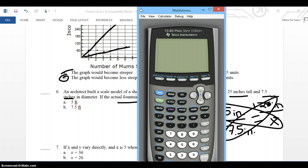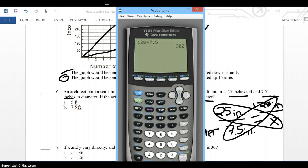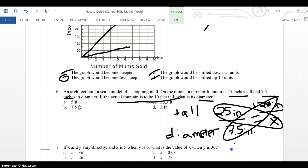I know that 120 times 7.5 is 90... I mean, sorry, it's 900. And I'm going to divide that by 25. That gives me 36 inches. So, X equals 36 inches. But, my answers are all in feet. What is 36 inches in feet? Well, 36 divided by 12 will give me 3. So, my answer is D.